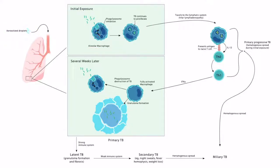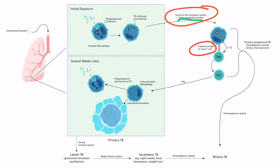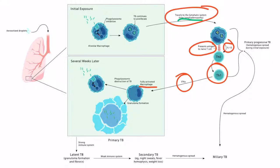Shortly after initial exposure, the alveolar macrophages travel to the lymphatic system, eliciting an immune response within the lymph nodes and causing hilar lymphadenopathy. The macrophages present TB antigens to naive T-cells. The macrophage produces IL-12, which induces naive T-cells to become T-helper type 1 (Th1) cells. Th1 cells release interferon-gamma, a crucial cytokine responsible for fully activating macrophages — though this takes several weeks.